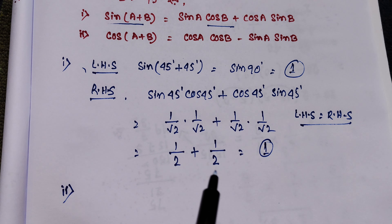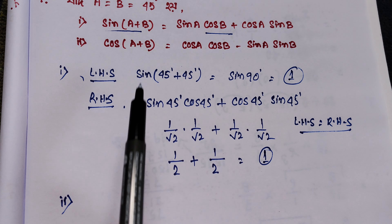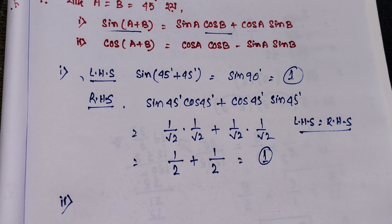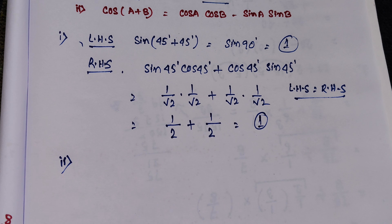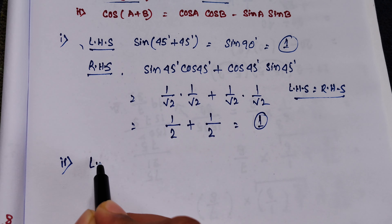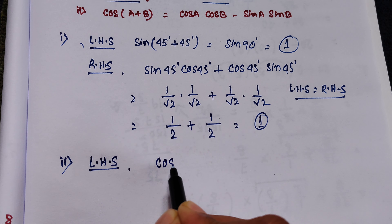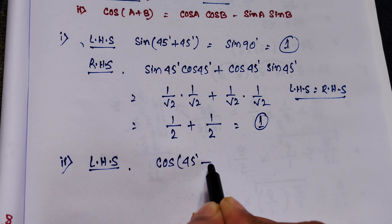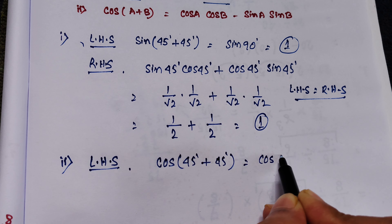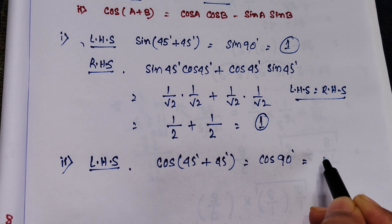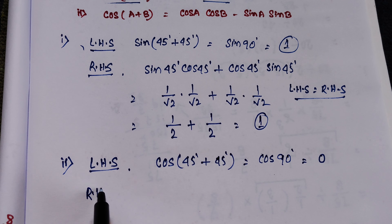Now for cos of a plus b: cos 45 degrees is equal to 1 by root 2. We write the left hand side, a plus b equals cos 90 degrees equals 0.